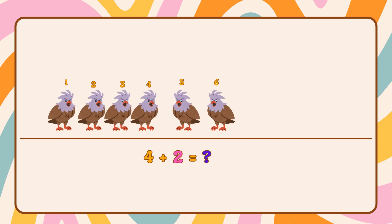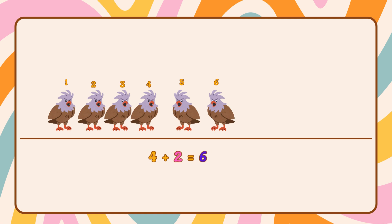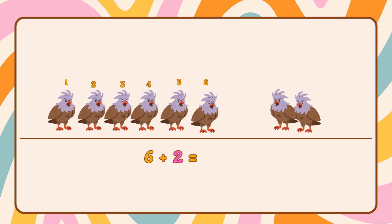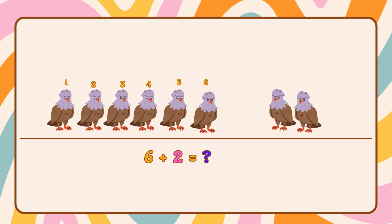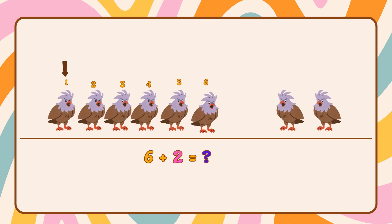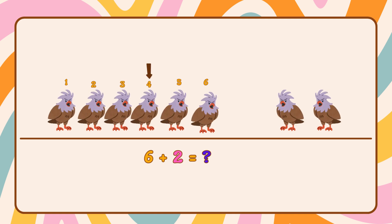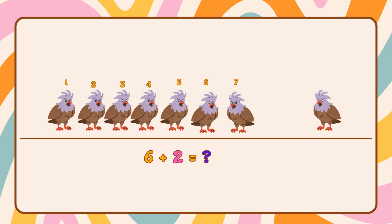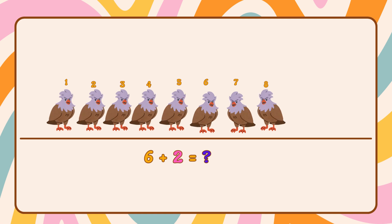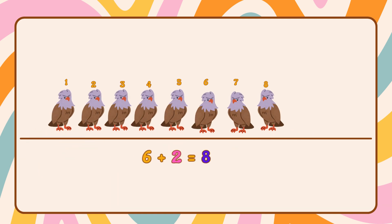Two, three, four, five, six. There are six eagles. So four plus two is six. Another two eagles join them — how many are there now, altogether? One, two, three, four, five, six, seven, eight. Eight eagles — six plus two equals eight.